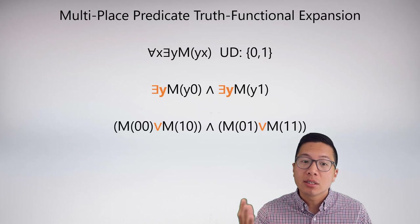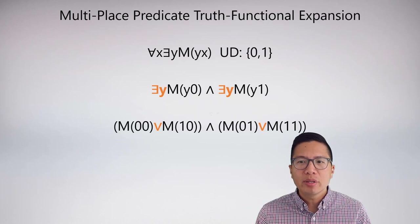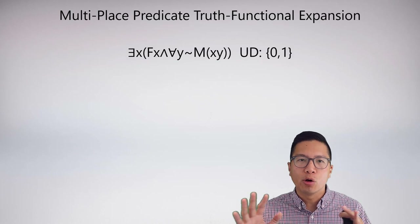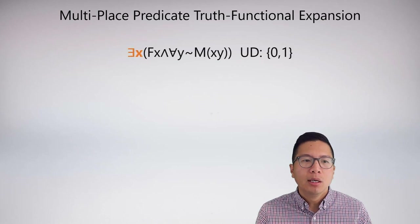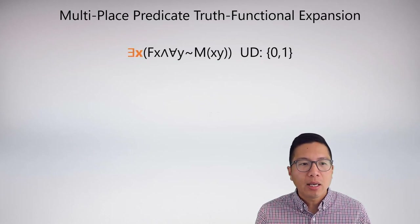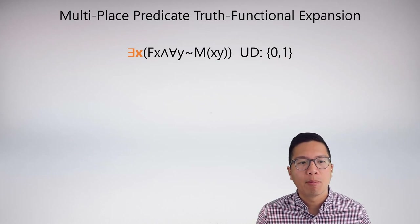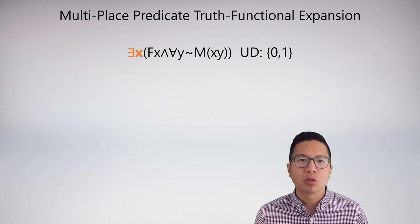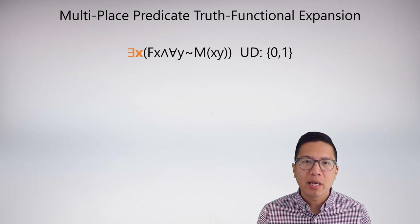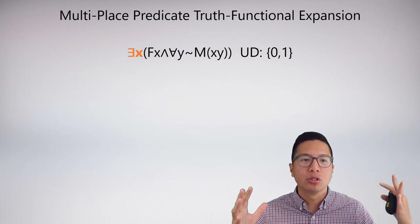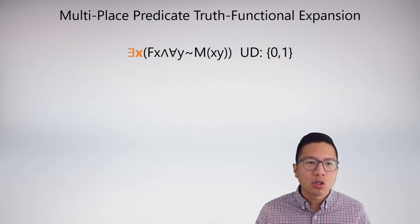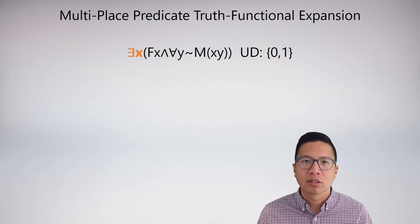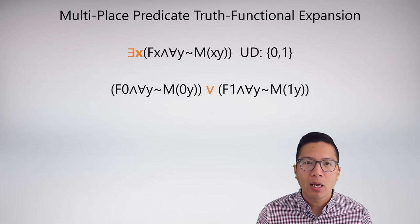Don't forget that when you expand things where the scope is not over the entire sentence, you need to restrict the expansion of your quantifier. Going outside in again, I have: there exists x, F(x), and for all y, negation M(x,y). With a universal discourse of two members, 0 and 1, the first expansion covers the entire sentence because the existential ranges over the whole thing. So the main connective becomes a disjunction where in the first disjunct all x's are 0, and in the second disjunct all x's become 1. It's a very mechanical process.